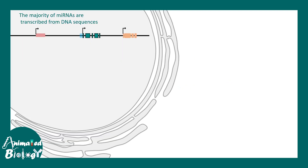How does that work? Basically, the majority of microRNAs are transcribed from DNA sequences. There are specific genes that give rise to precursors of the microRNA. Here is a particular gene that gives rise to a pre-microRNA — a precursor, or immature form, of the microRNA. First they are formed in this immature form, and eventually they get processed to become a mature microRNA.